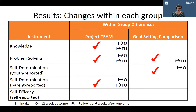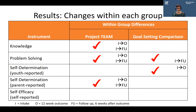We also saw changes within each group. Individuals in Project TEAM had significant increases over time in knowledge, problem solving, and their feeling of self-determination as reported and observed by their parents. Individuals in the goal-setting group did have some changes, but not as many. They initially reported an increase in their own perception of self-determination, and showed some improvement in problem solving, which makes sense because they were working on their goals.